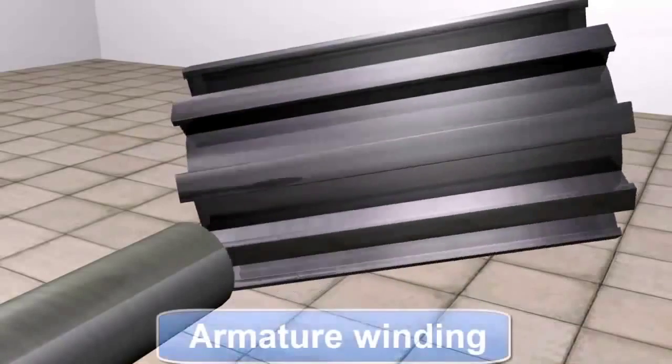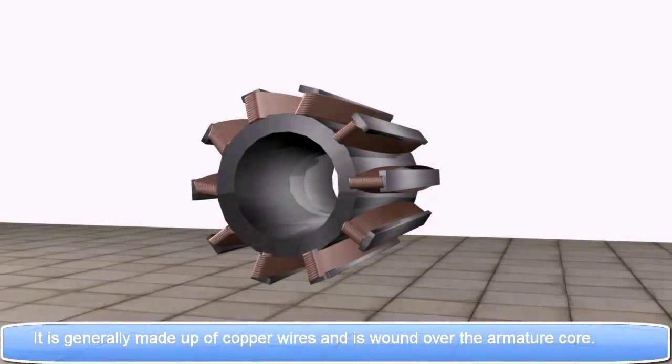Next is Armature Winding. It is generally made up of copper wires and is wound over the armature core.